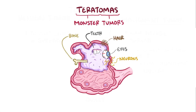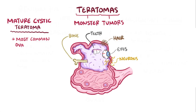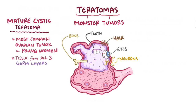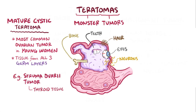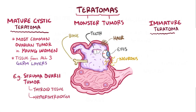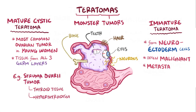There are two types of teratomas. The first are mature cystic teratomas, which are the most common ovarian tumors in young women and are formed from tissue that comes from any of the three germ layers. One example is the struma ovarii tumor, which is made up of only thyroid tissue and can release thyroid hormone, leading to hyperthyroidism. The other type are immature teratomas, which develop specifically from neuroectoderm cells, which come from the ectoderm layer. Immature teratomas tend to be malignant and metastasize quickly.